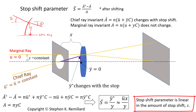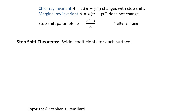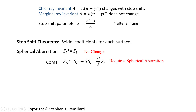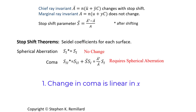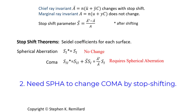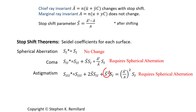That makes predicting what happens to the aberrations quite straightforward using the stop shift theorems. With the stop shift theorems, you can look at how the Seidel coefficients change with the stop shift. Spherical aberration doesn't change. The Seidel coefficient for coma after the stop shift is whatever it was before, plus the stop shift parameter times the Seidel coefficient for spherical aberration. One implication: since S is linear in position, the change in coma is linear in where the stop is. A second implication: if you don't already have spherical aberration, you can't change the coma by moving the stop. Astigmatism goes out to the stop shift parameter squared, and it changes more strongly than just linear.